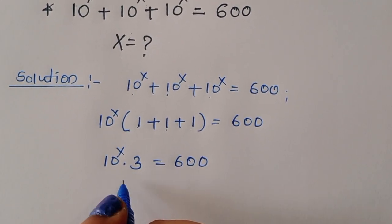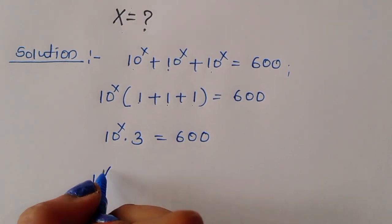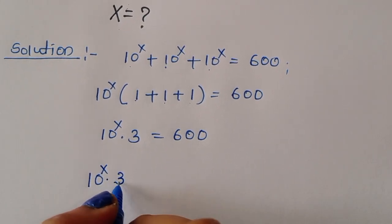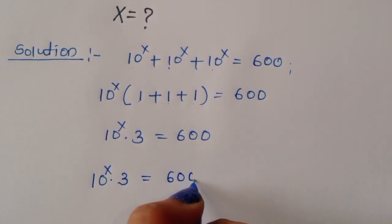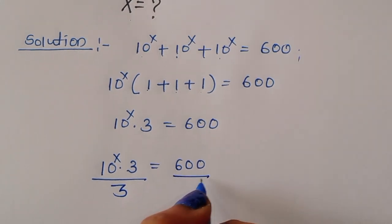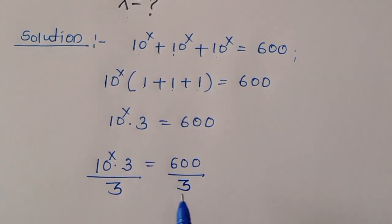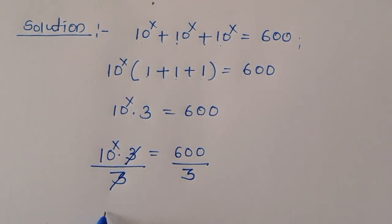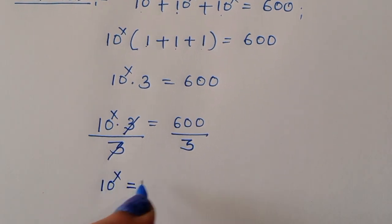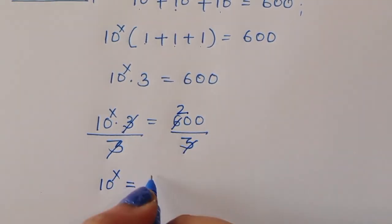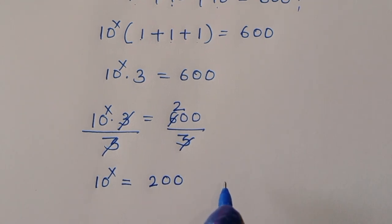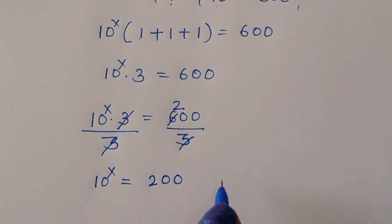Now we divide both sides by 3. The 3 cancels, so 10^x = 200.